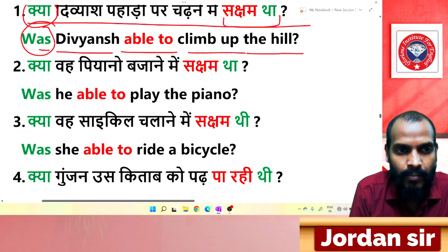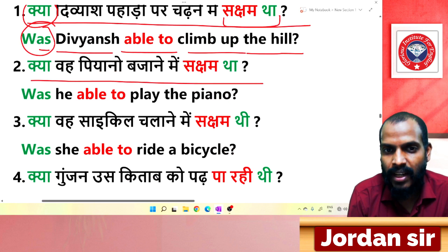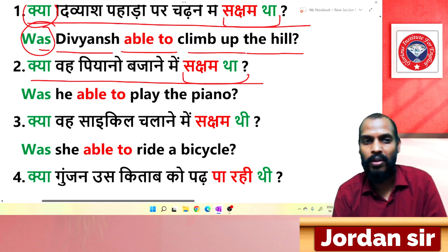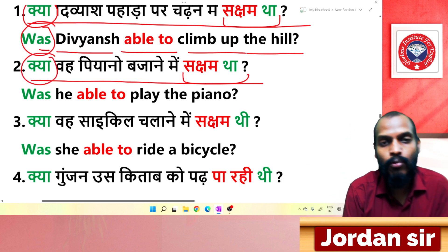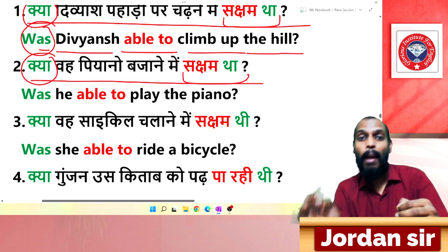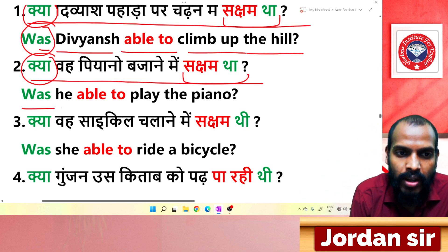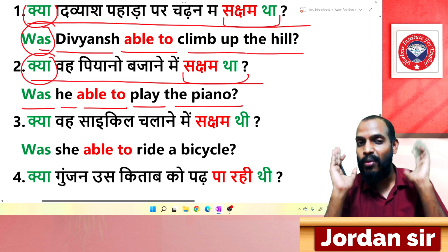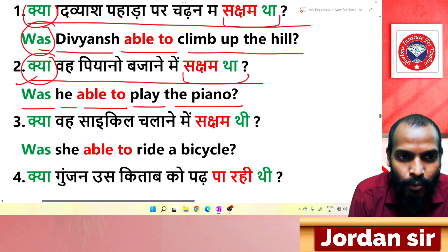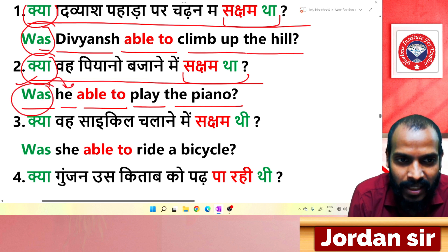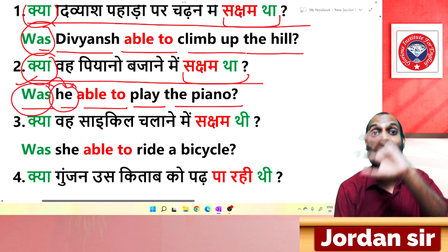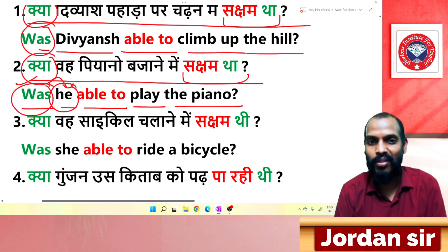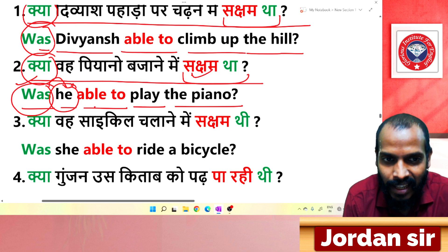Next interrogative: 'क्या वह पियानो बजाने में सक्षम था?' Since it is interrogative, 'was/were' goes before the subject. Translation: 'Was he able to play the piano?' 'He' is singular so 'was' is used. From 'सक्षम' comes 'able to'. Was he able to play the piano?